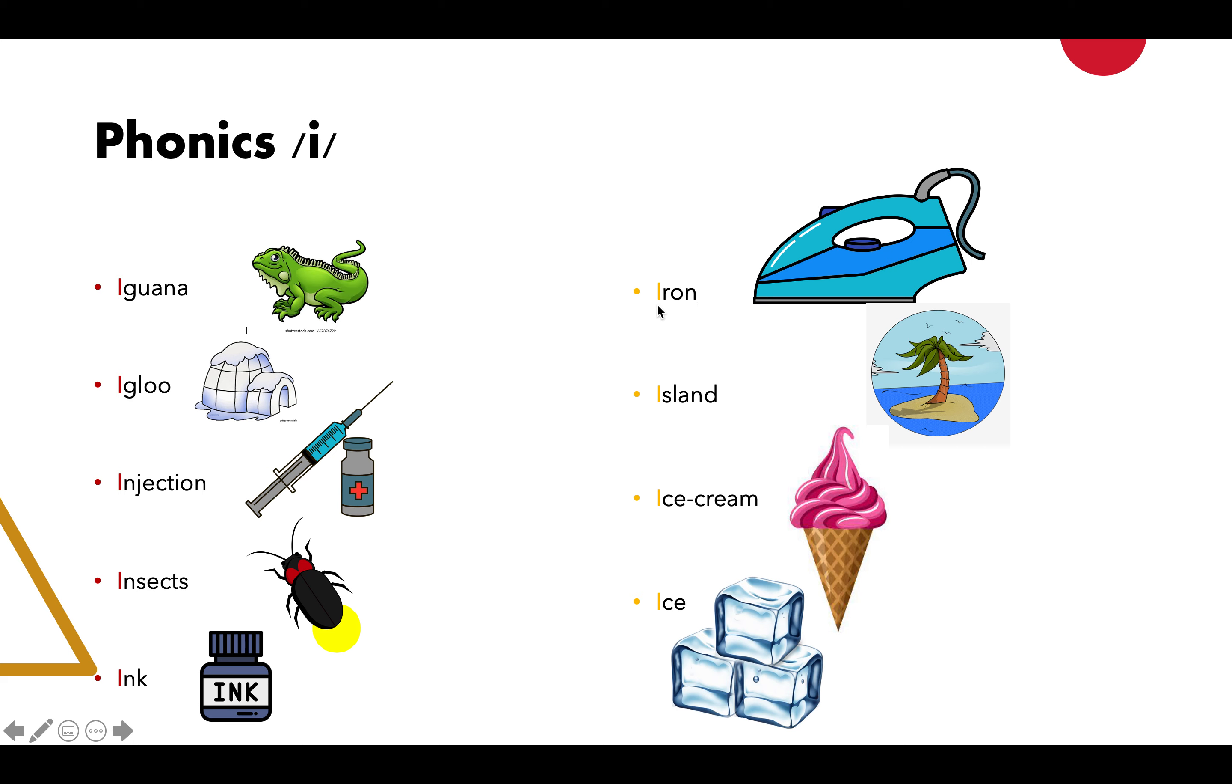Bunyi dia yang dekat perkataannya di sini bunyi dia macam /i/. Iron, island, ice cream, ice. Yang ni tadi bunyi dia macam /e/. Iguana, igloo, injection, insects, ink. Walaupun phonics dia sama /i/, tetapi dia ada dua sebutan yang berbeza.